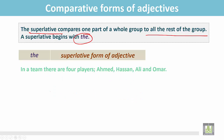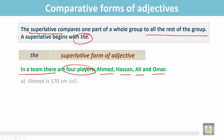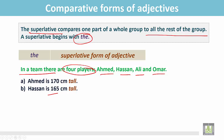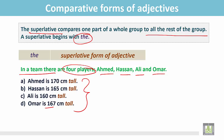See the example in a situation. In a team there are 4 players: Ahmed, Hassan, Ali, and Omar. Ahmed is 170 cm tall, Hassan is 165 cm tall, Ali is 160 cm tall, and Omar is 167 cm tall. Among these 4 players, we find that Ahmed is the tallest.